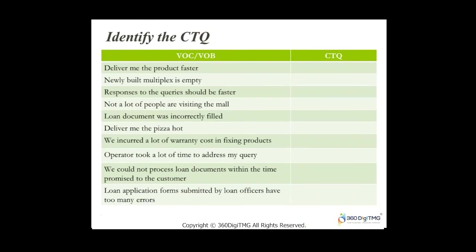Let's do a quick exercise to identify what the CTQs could be based on Voice of Customer and Business. This will also clear up any remaining doubts. Your customer or business says 'deliver me the product faster' — what could the possible CTQ be? Think about the examples we've looked at.